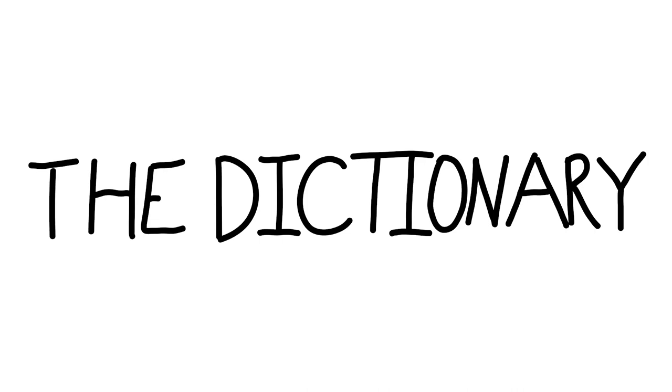The first word is bend, B-E-N-D. It is the first form, a verb from before the 12th century. First are the transitive definitions. One, to constrain or strain to tension by curving, as in bend a bow. To A, to turn or force from straight or even to curved or angular. To B, to force from a proper shape.